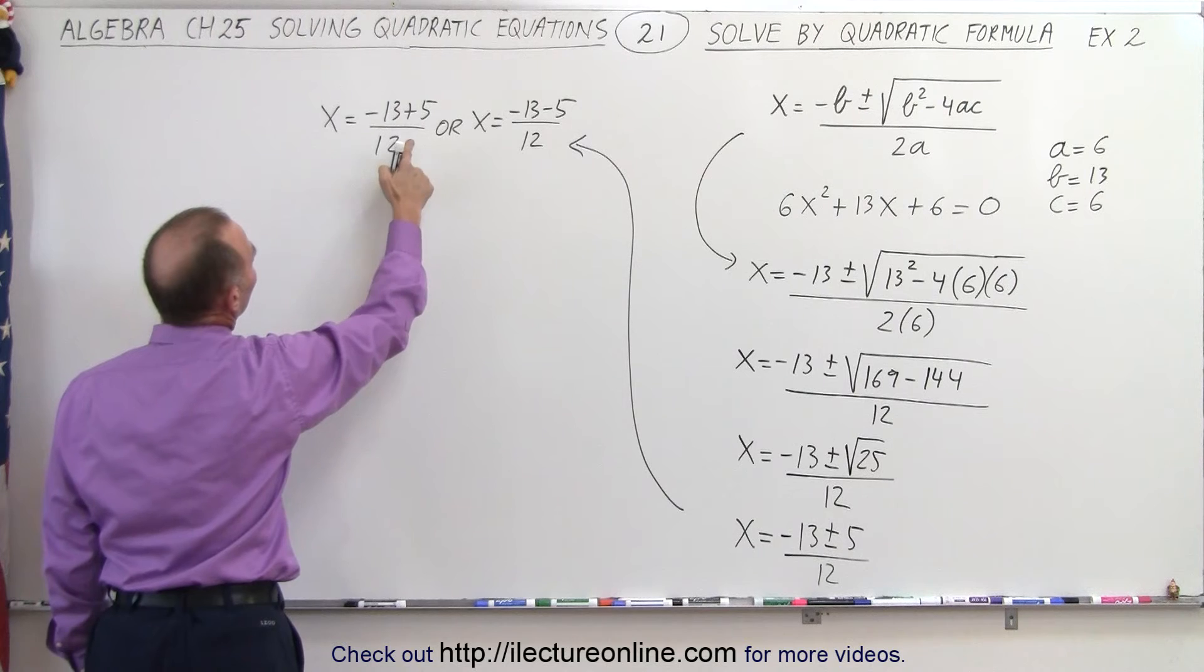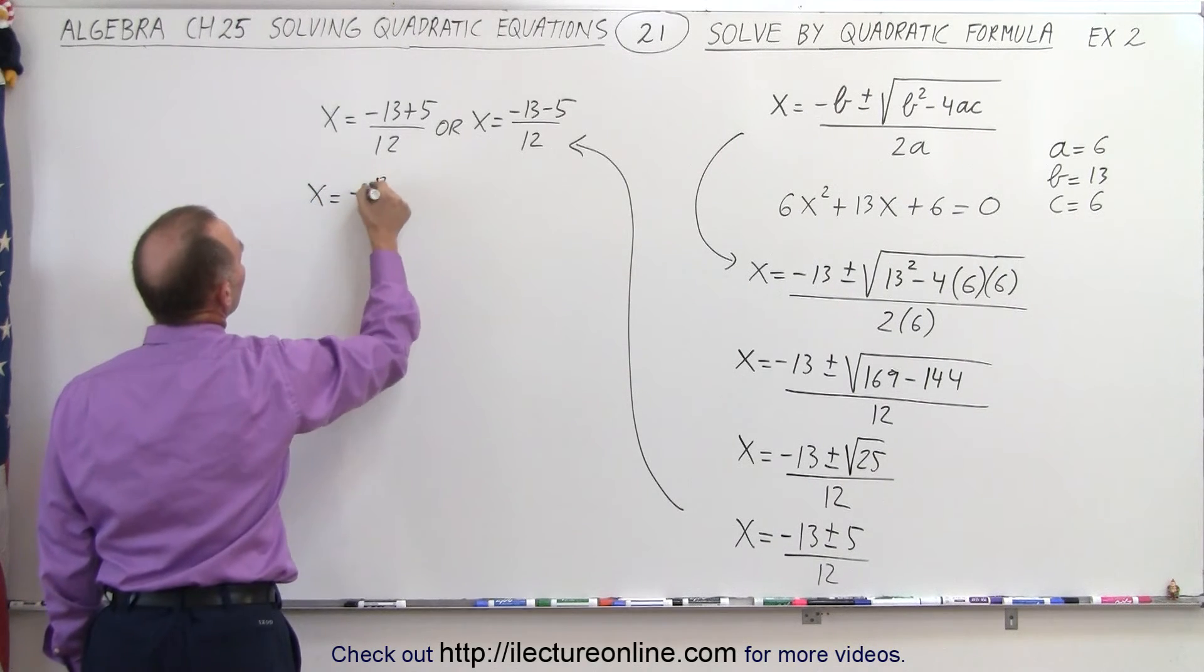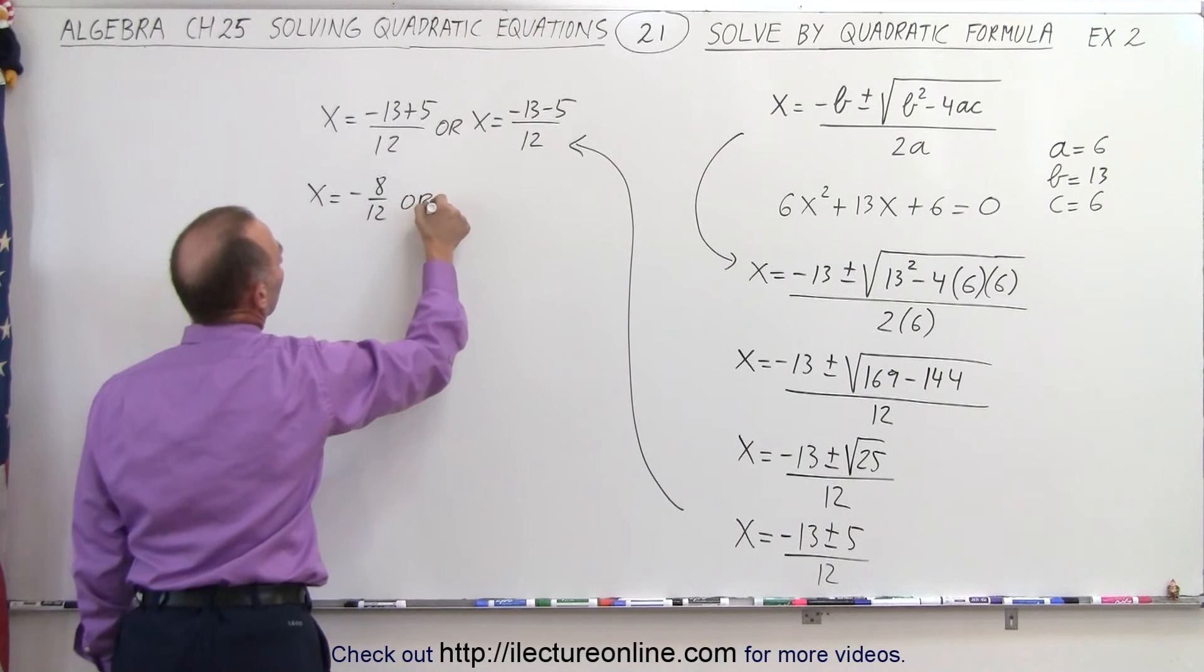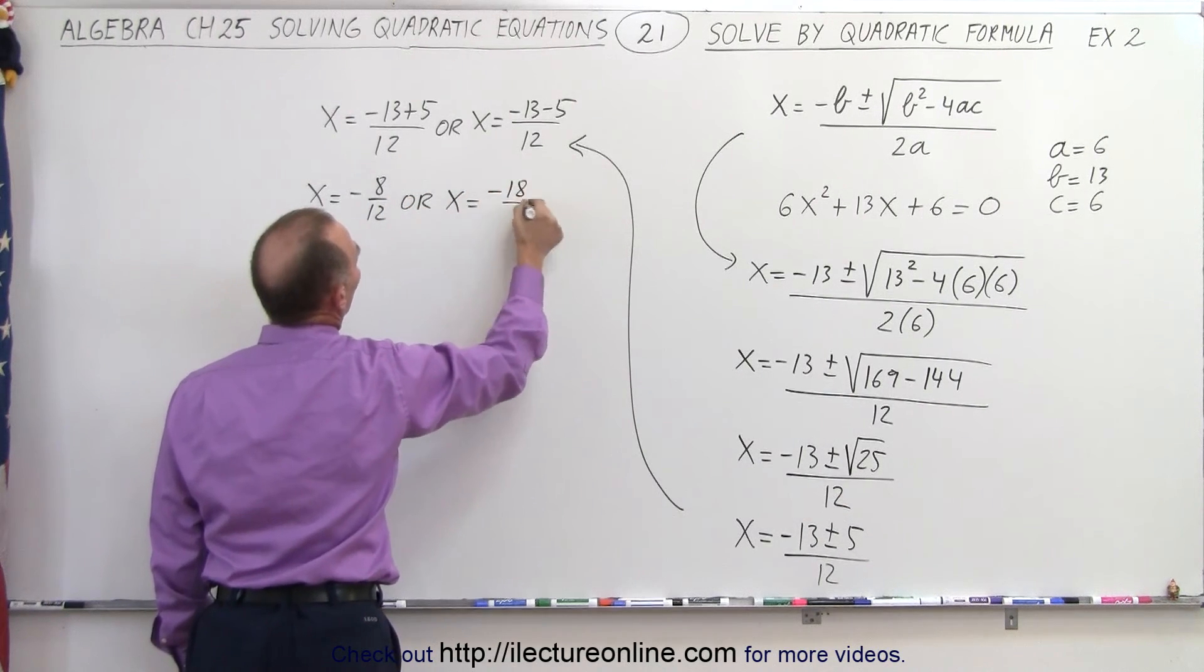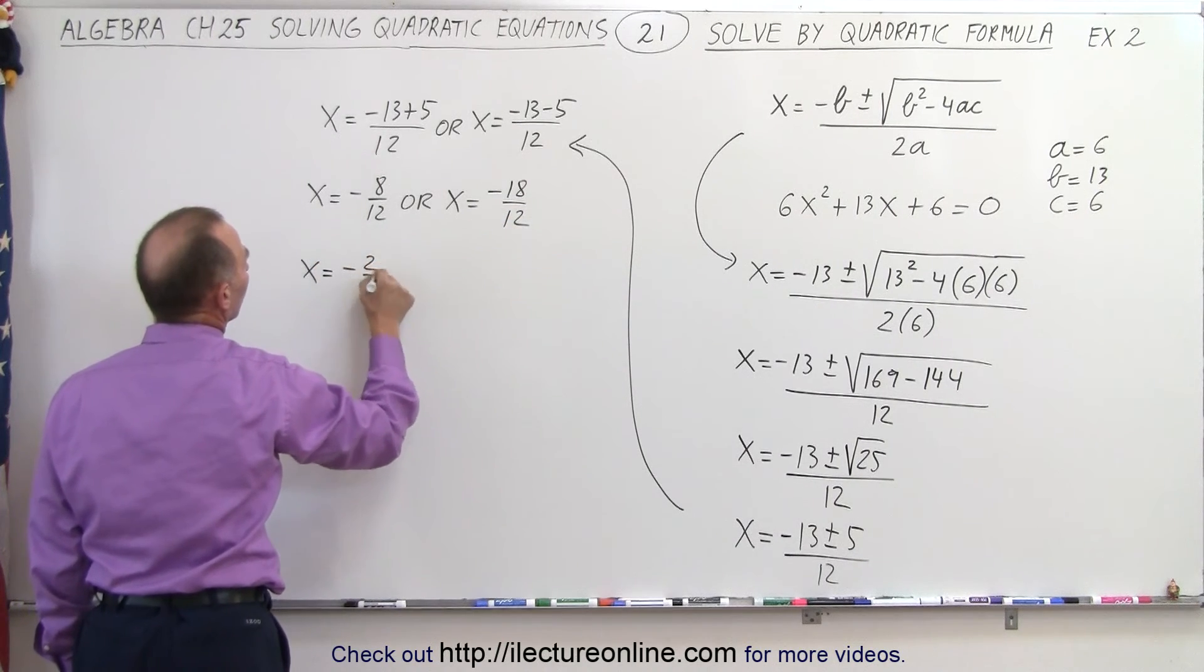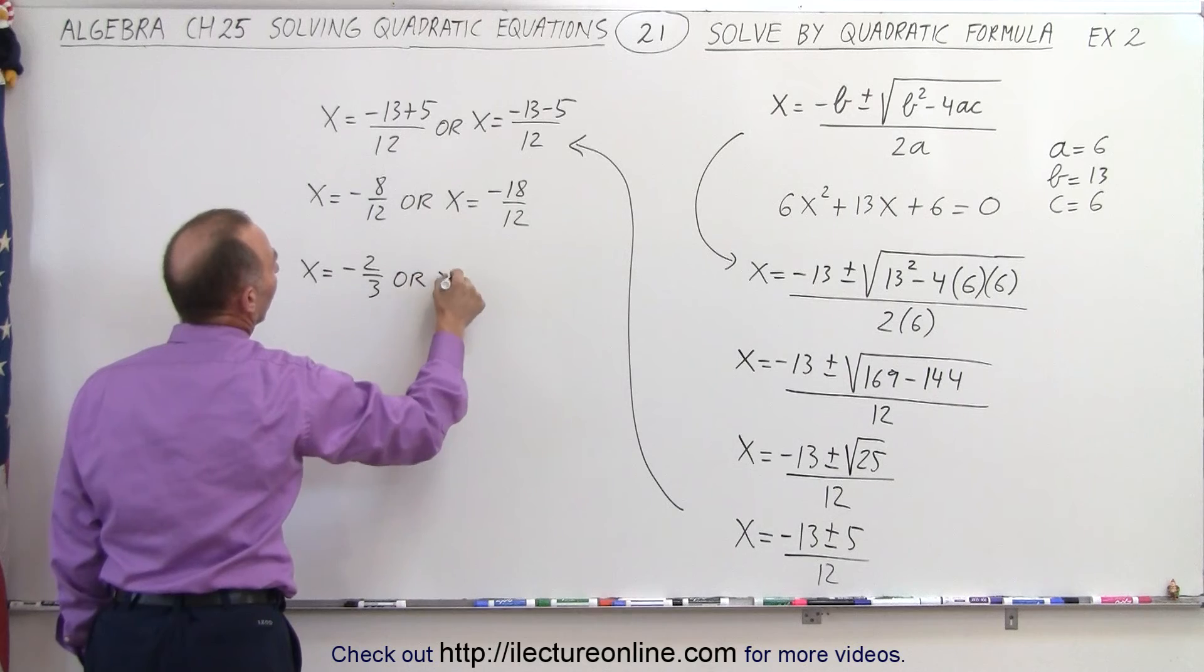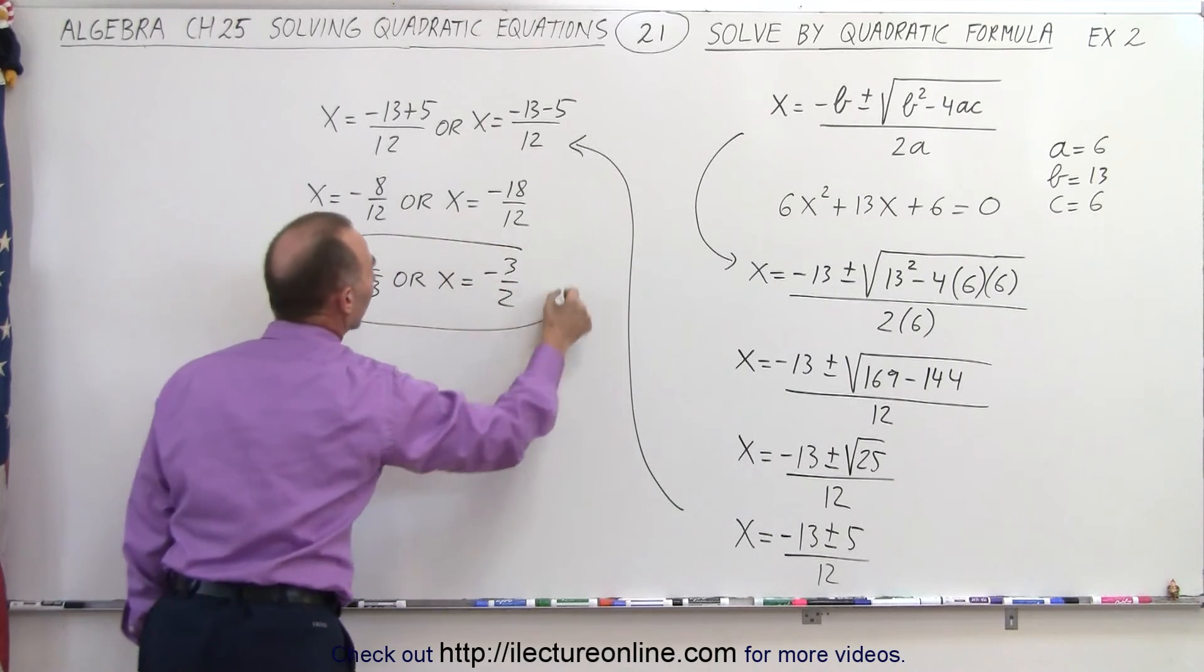So minus 13 plus 5 is minus 8 over 12, so x equals minus 8 over 12, or x is equal to minus 3 over 2. And those are the two possible solutions, not two possible, those are the two actual solutions of our original quadratic equation.